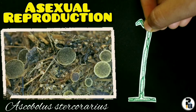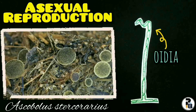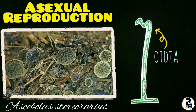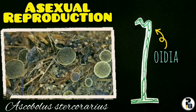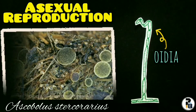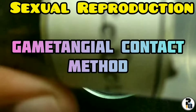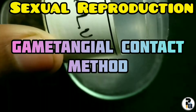but on germination produces somatic hyphae. In Ascobolus stercorarius, a large number of oidia are formed in chains from both the mycelium derived from ascospores. Each oidium on germination produces new hyphae. Sexual reproduction takes place by the gametangial contact method.